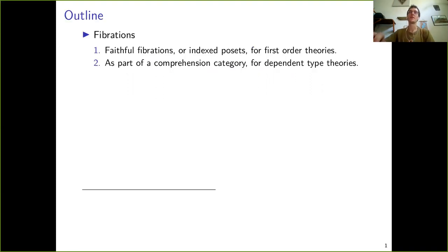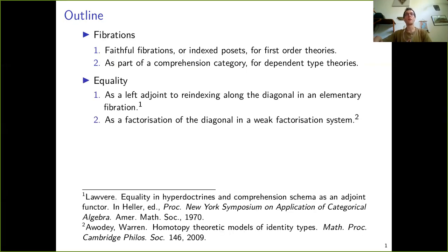More specifically, we shall be using the language of fibrations. The faithful fibrations, or indexed posets if you prefer, provide an algebraic specification for logical theories and their semantics, while on the other hand they also appear as part of a model of a dependent type theory, say as in a comprehension category. Equality in the first sense has an established category-theoretic treatment in terms of certain left adjoints, and a fibration having these left adjoints is called elementary, while the category-theoretic treatment of the identity type is currently done using weak factorization systems or some related structure.